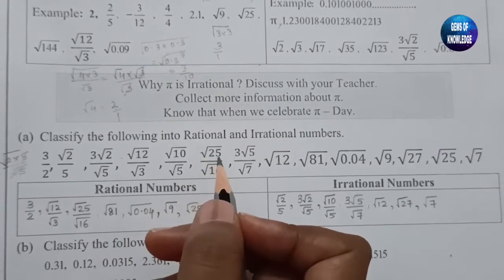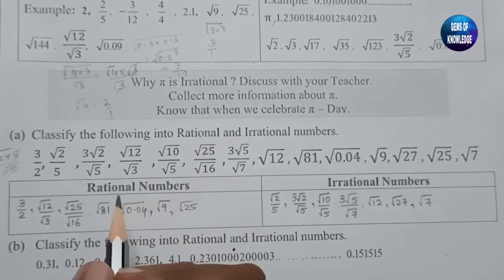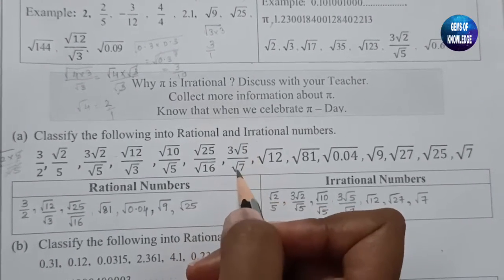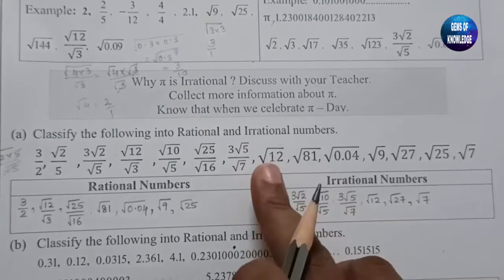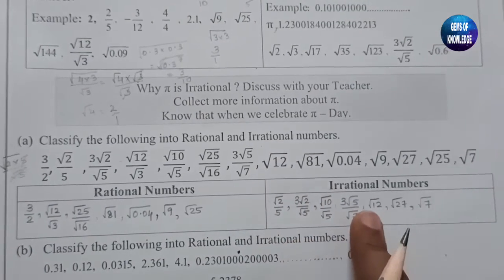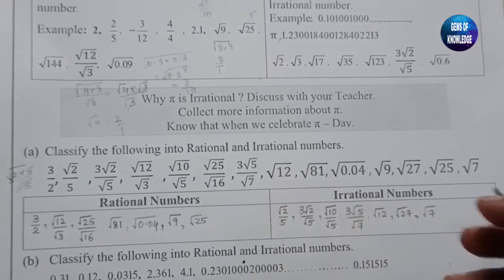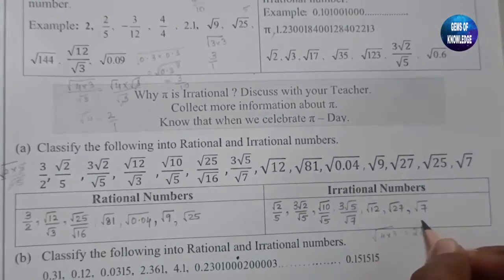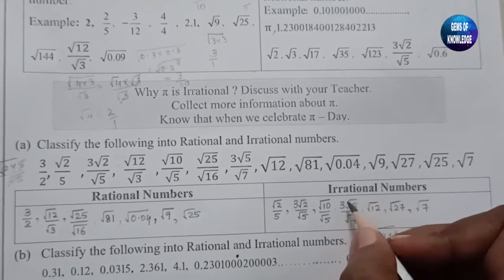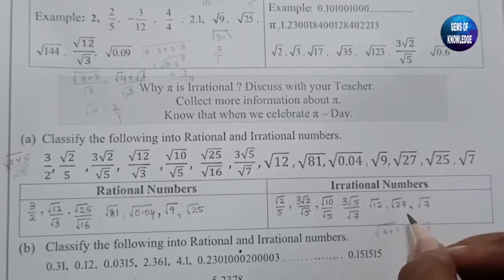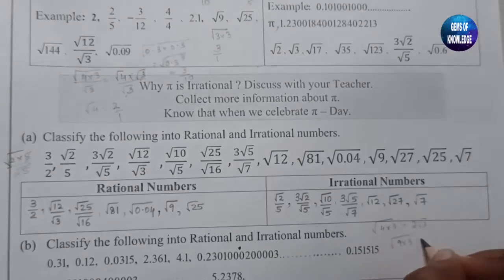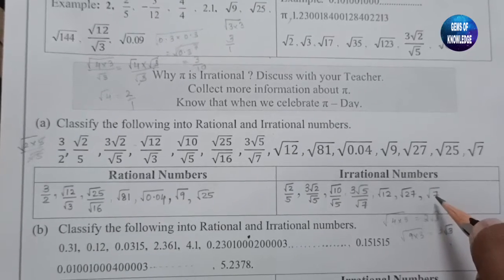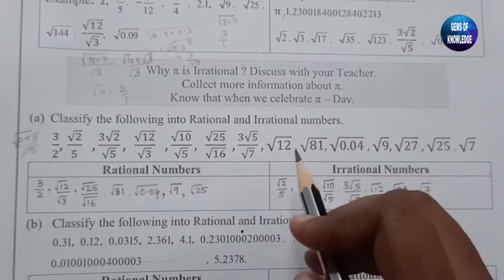Root 25 by root 16 gives 5 by 4 — a rational number. Then 3 times root 5 divided by root 7: since root 5 and root 7 cannot be opened, this is irrational. Root 12 is also irrational — if you open it you get 2 times root 3, and since root 3 remains, it is irrational. Root 27 equals root of (9 times 3), giving root 3 as a factor, so it is also irrational. Root 7 is irrational.